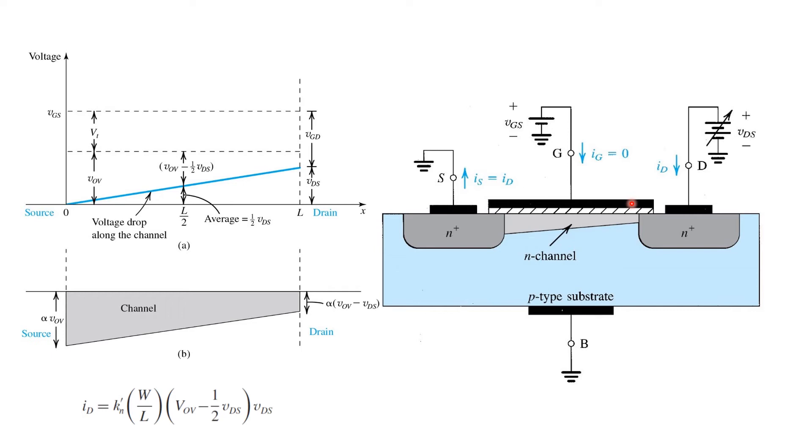Therefore, we get a channel profile such as the one illustrated here, where the channel region is more inverted near the source and less inverted near the drain.